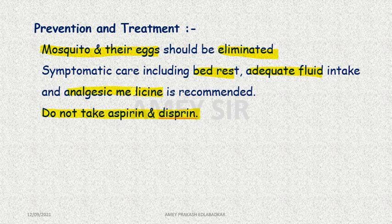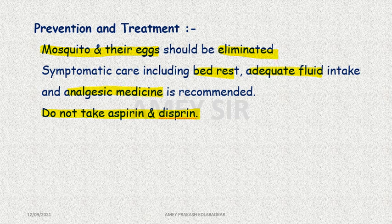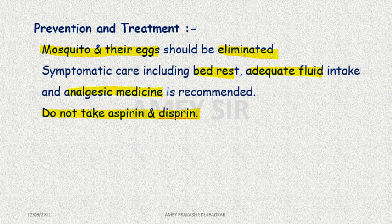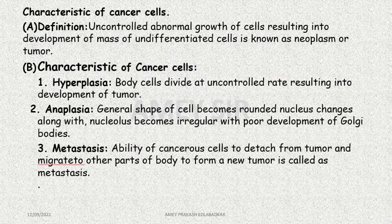Dengue does not spread from one person to another. Papaya leaves juice, raw garlic, and tulsi leaves are helpful remedies. Platelet count decreases significantly in Dengue. These were important symptoms and prevention or treatment for Dengue.